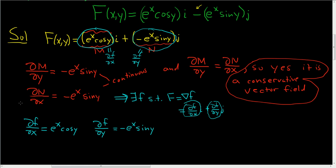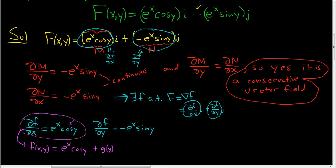Now we'll carefully integrate. We get to pick which one we want to integrate — let's do the first one. So f of x, y, integrating with respect to x: the integral of e to the x is e to the x, and we treat cosine y as constant. This gives us e to the x cosine y, and we add an unknown function g of y, because when you integrate a partial with respect to x you add an unknown function of y.